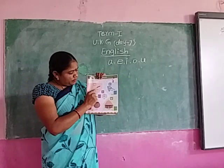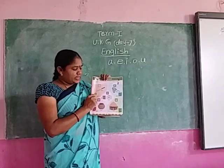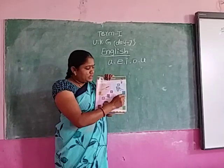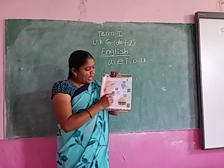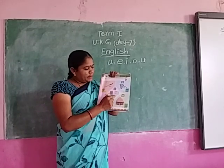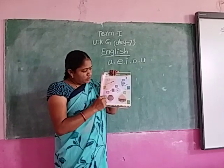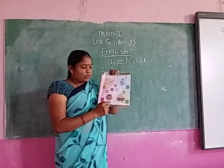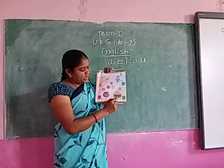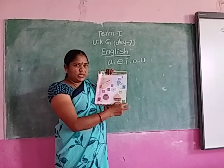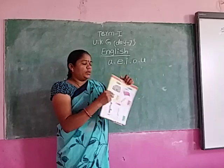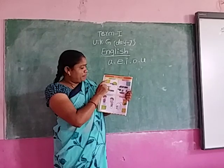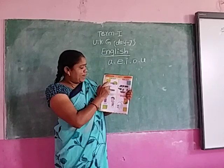Vowel A letter words: B-A-T bat, M-A-T mad, C-A-T cat. Vowel E letter words: N-E-T net, P-E-T pet, W-E-T wet. Next, vowel I letter words: B-I-T bit, P-I-T pit, K-I-T kit. Next, vowel O letter words: H-O-T hot, C-O-T cot, P-O-T pot. Next, vowel U letter words: H-U-T hut.